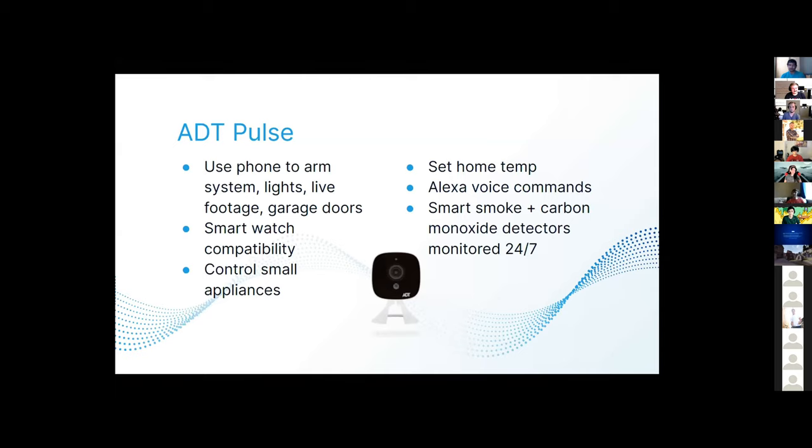This one's the ADT Pulse. You can use your phone to arm the system, lights, live footage, and garage doors. It has smartwatch compatibility, allows you to control small appliances or set the temperature in your house, connected to Alexa. It also has smart smoke and carbon monoxide detectors to monitor your house 24-7. If I had this system, I would probably use the Alexa voice commands. Instead of the smoke alarm, I'd have it play Despacito, so I know not to go slowly when evacuating my burning house.